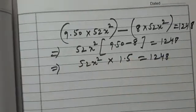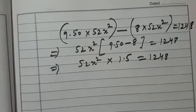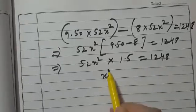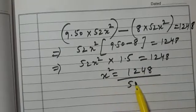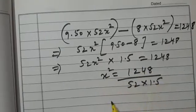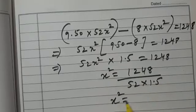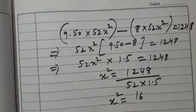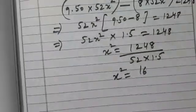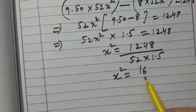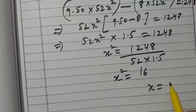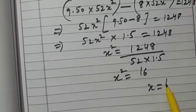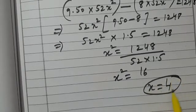When we simplify this, we get x² = 1248/(52 × 1.5), and we get x² = 16. We know this will be a positive number, so x = 4.